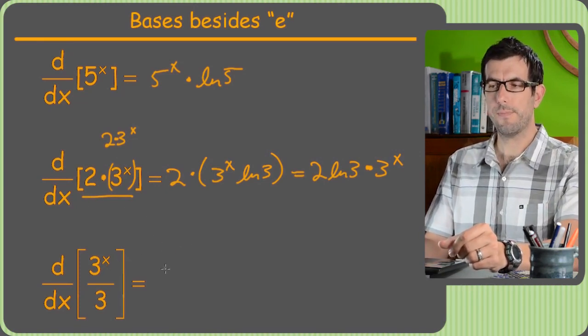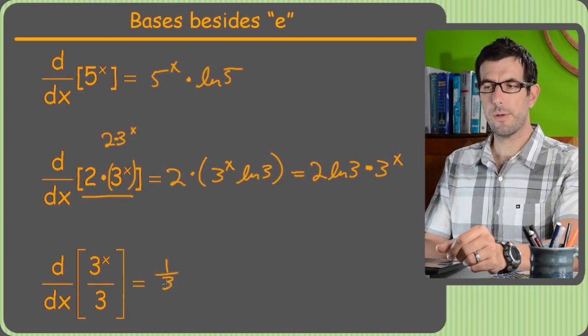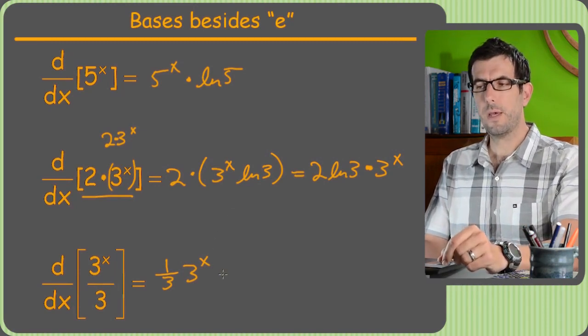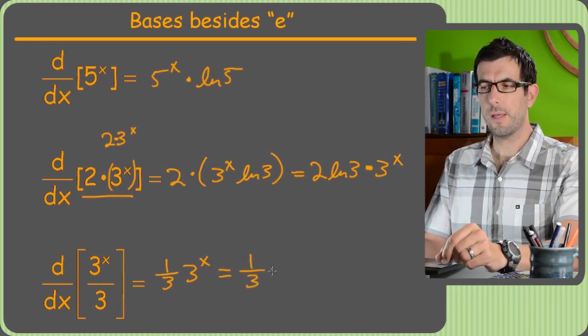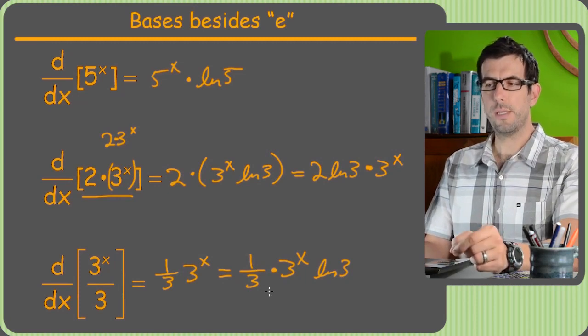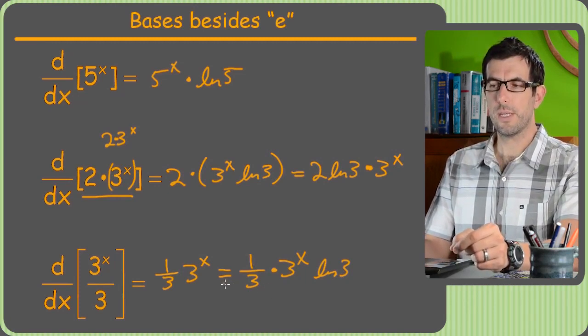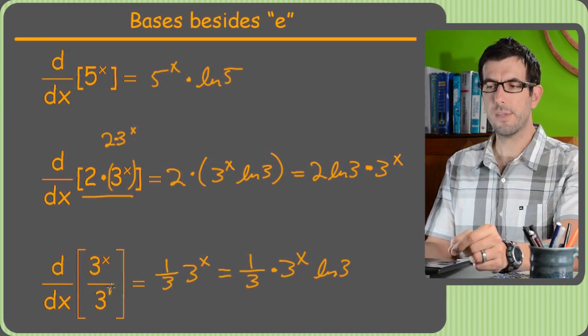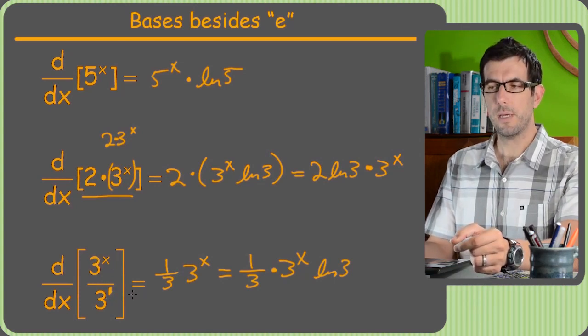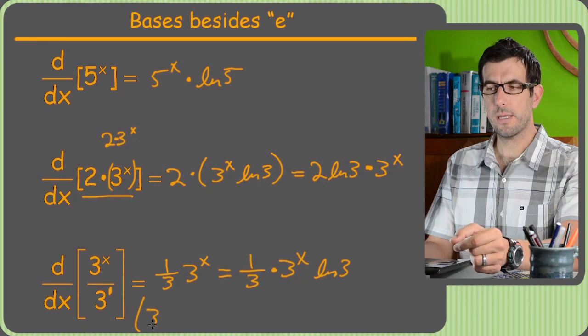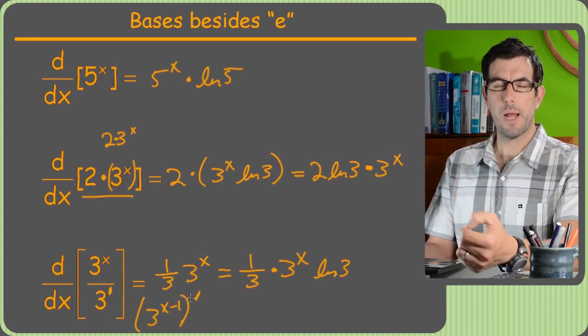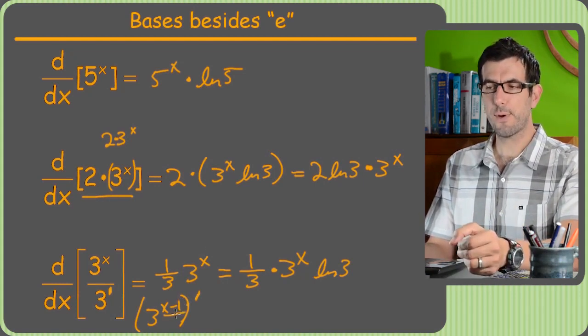This last one, same trick we had before: dividing by 3 is really just 1 third times 3 to the x. And the reason I did that is so it would look less like a quotient rule problem. Once I got this, I just keep everything, so I keep the 1 third and I multiply times 3 to the x, then I multiply by the ln of 3. There's another way to do this, which I'll show you in a second, which is, you know what we could have done is taken this and said to ourselves, huh, that's 3 to the x divided by 3 to the 1, so really that's similar bases that can subtract exponents. So you could rewrite this as 3 to the x minus 1 and then take the derivative of that instead of this.